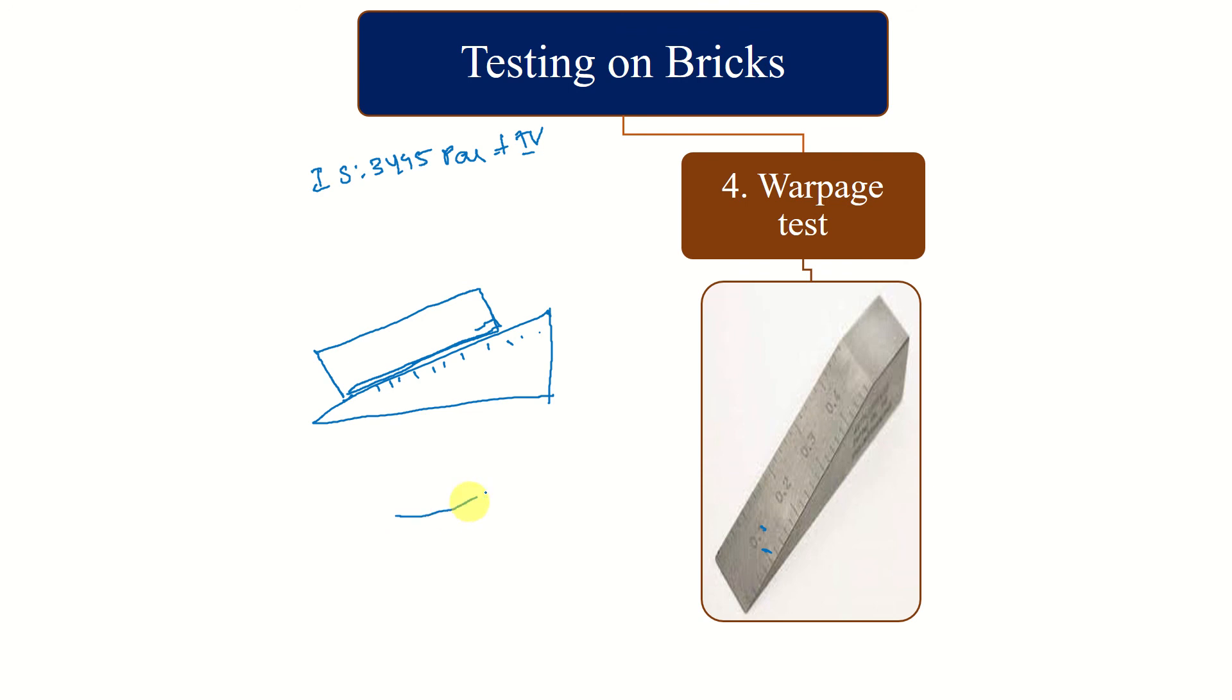Sometimes the brick is not exactly matching or in contact properly with this inclined surface. Sometimes the brick may be like this. You can see the gap - you have to measure the gap. So this is called concave warpage. Warpage is nothing but misshaping.